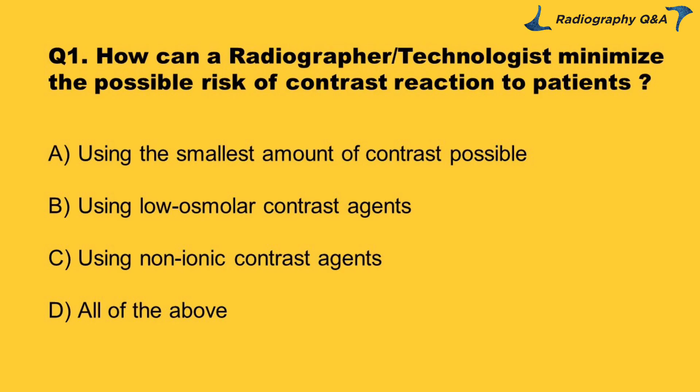Question 1: How can a radiographer/technologist minimize the possible risk of contrast reaction to patients? Option A: using the smallest amount of contrast possible. Option B: using low osmolar contrast agents. Option C: using non-ionic contrast agents. Option D: all of the above. Right answer is Option D.